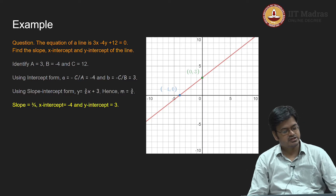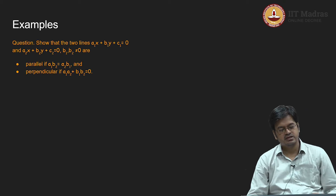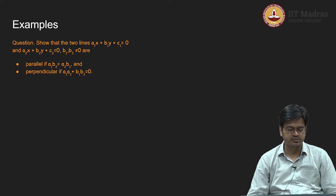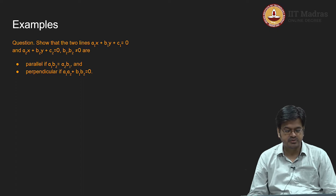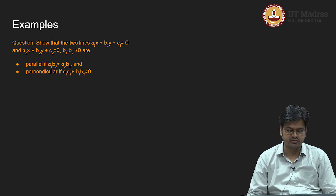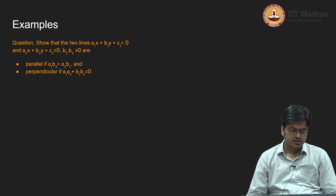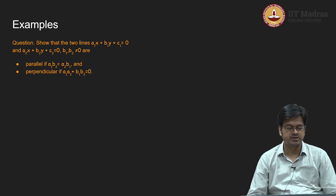Let us look at the next example, which is another application of the general form of equation of a line. If we are given two lines a₁x + b₁y + c₁ = 0 and a₂x + b₂y + c₂ = 0, where b₁ and b₂ are not equal to 0 — meaning the lines are non-vertical — then the two lines are parallel if a₁b₂ = a₂b₁, and perpendicular if a₁a₂ + b₁b₂ = 0.